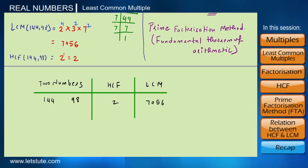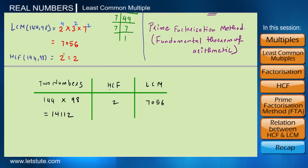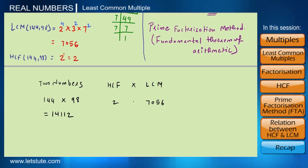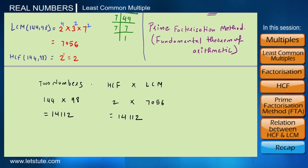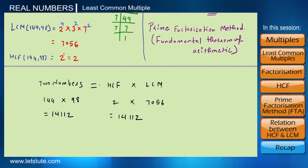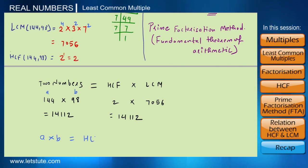If we take the product of 144 and 98, we get 14,112. Similarly, if we take the product of their HCF and LCM — that is 2 times 7056 — we also get 14,112. So we can conclude that the product of two given numbers equals the product of their HCF and LCM. In general, for any two positive integers a and b: a × b = HCF(a,b) × LCM(a,b).